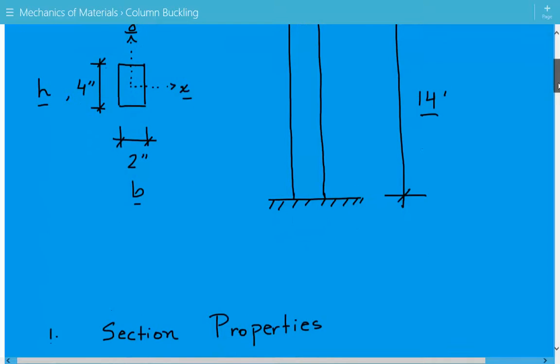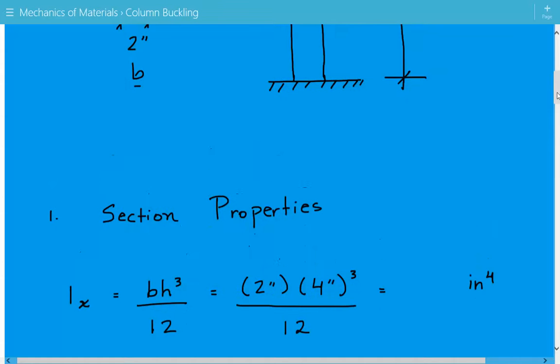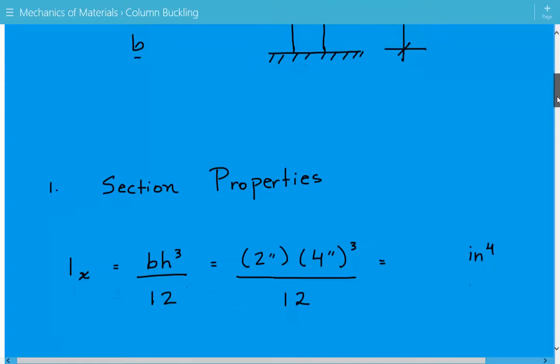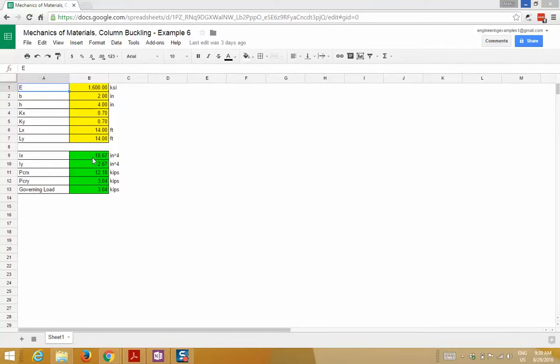First thing we're going to do is get the section properties and we need to get the moment of inertia about the X axis. It's equal to BH cubed over 12. I made a spreadsheet for this example, so IX equals 10.67 inches to the fourth power.